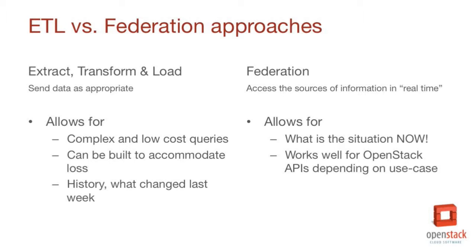In Federation — and people have different meanings for that — it's a way of just reaching out to an API and gathering the information you want. If I was looking for information spread across a complex of what my customers are doing and wanted to get information about the tenant ID, I'd have to go out to Nova, Neutron, Cinder, all these different places and pull this together dynamically in real time. That's what Federation is about — it's useful for when you want information right now, because those are very accurate and you'll have exactly what you're looking for.